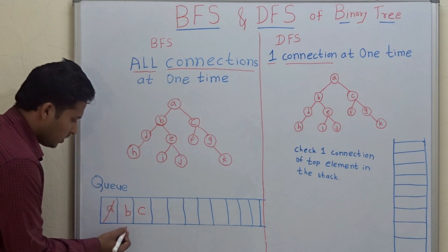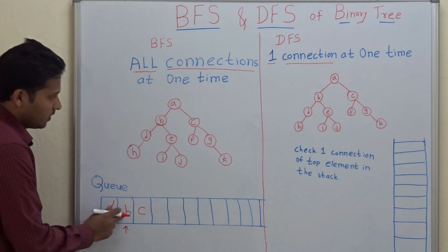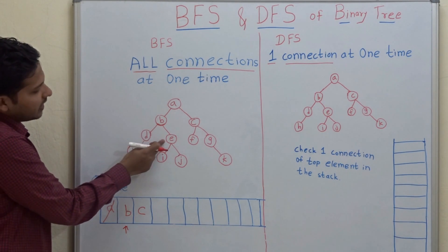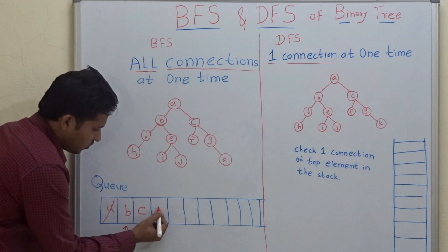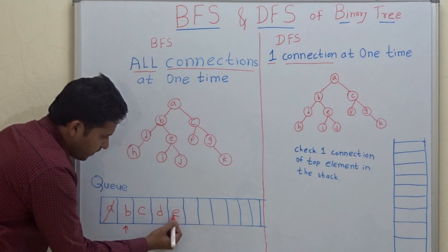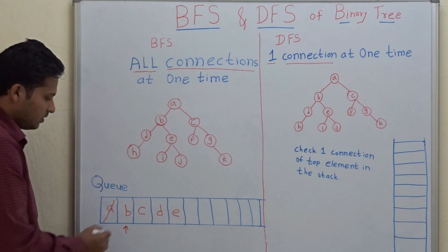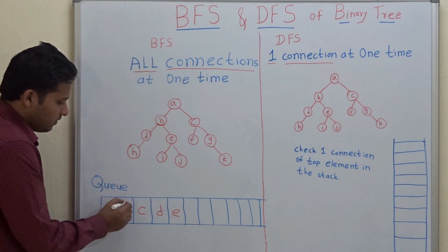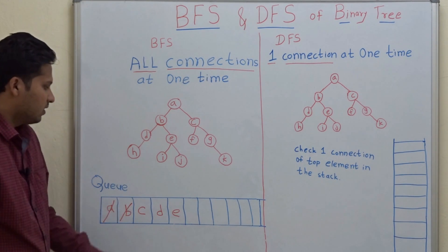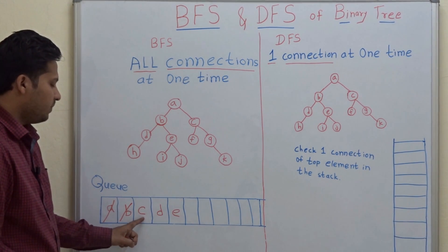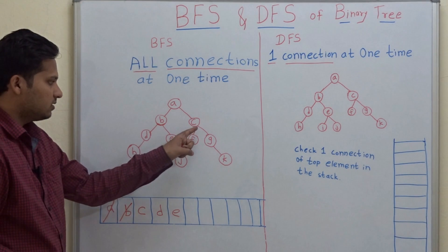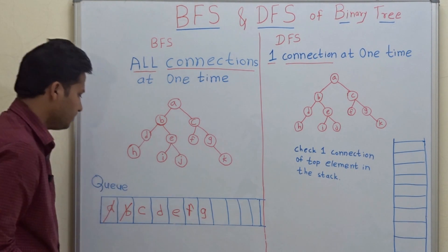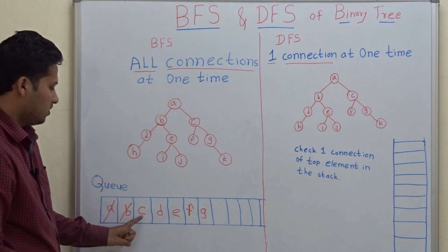Now we go to B. What are all connections of B? It is D and E. So put D and E in the queue — that is enqueue D and E. As we have enqueued all the connections, we dequeue B. Then the next element is C in the queue. Its connections are F and G, so we enqueue them. Now dequeue C.